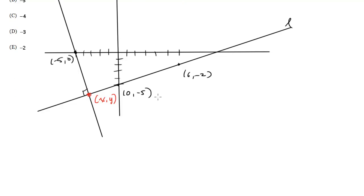Let's start by finding the slope of line L. We do that by using the slope formula, y2 minus y1 over x2 minus x1. So let's do negative 2 minus negative 5 over 6 minus 0. Negative 2 minus negative 5 is 3 over 6, so we get one half.